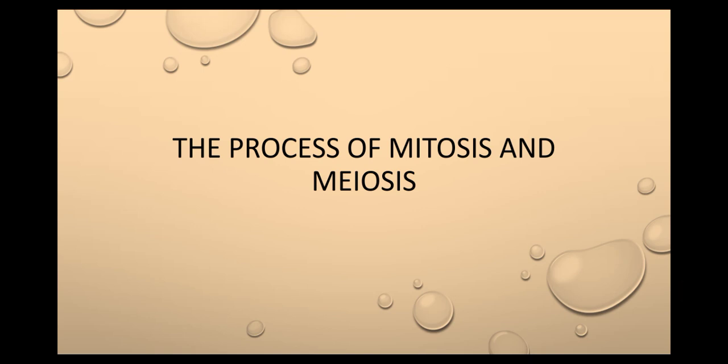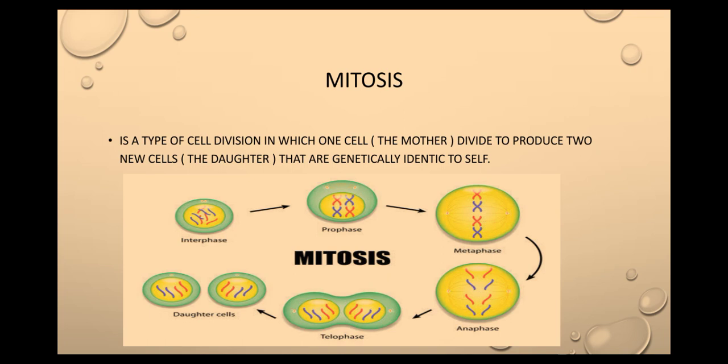First, I will define mitosis. Mitosis is a type of cell division in which one cell divides to produce two new cells that are genetically identical to each other.